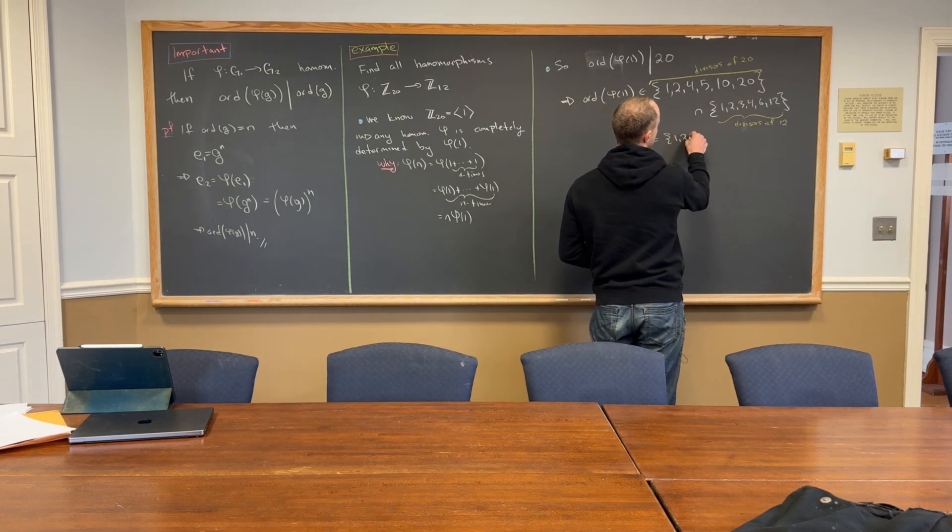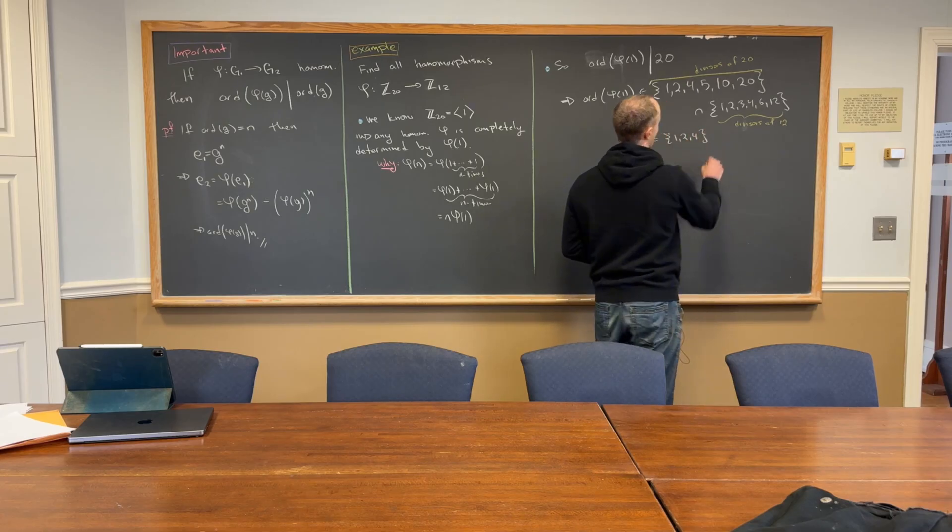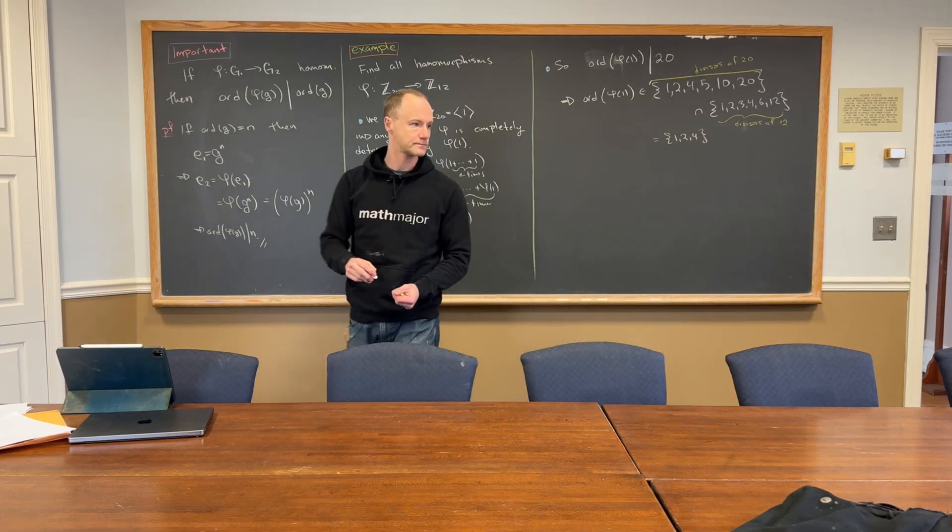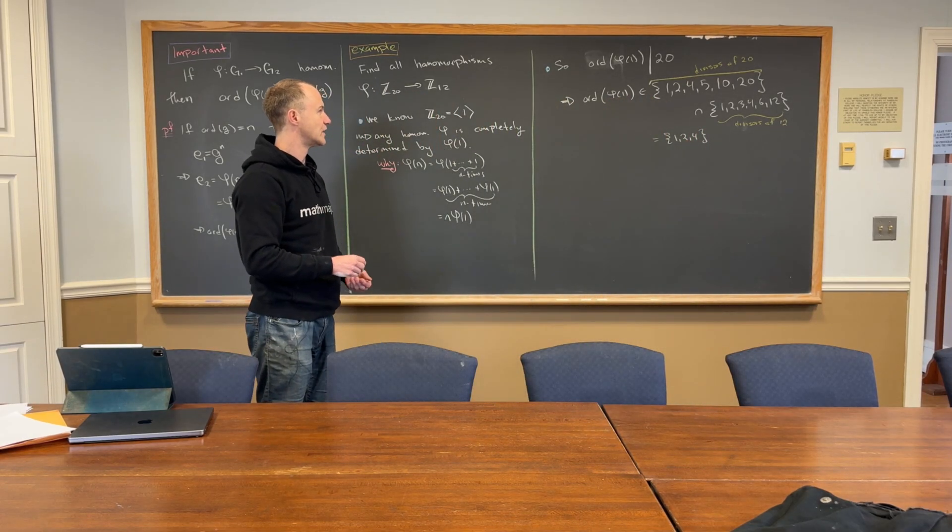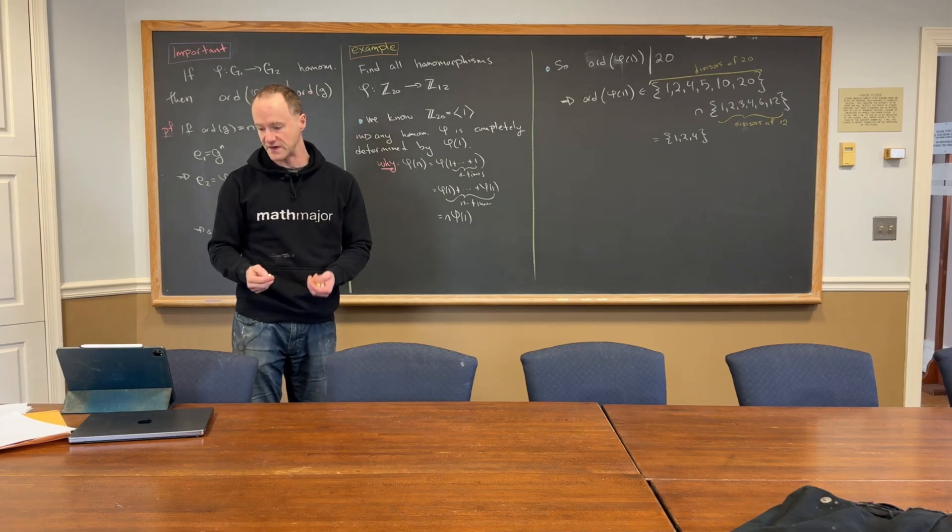So, the possibilities are going to be, what? One, two, and four. That's it, right? Yeah. So, those are the possible orders of phi of one.